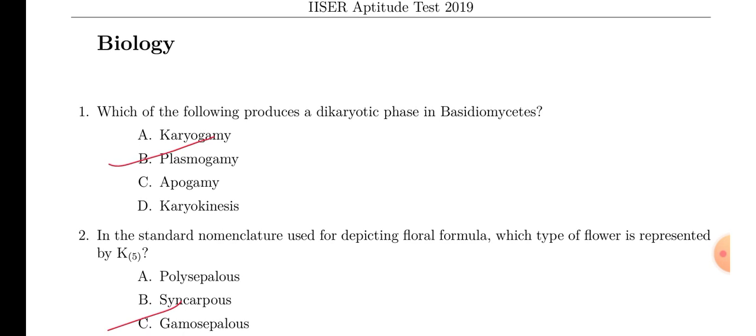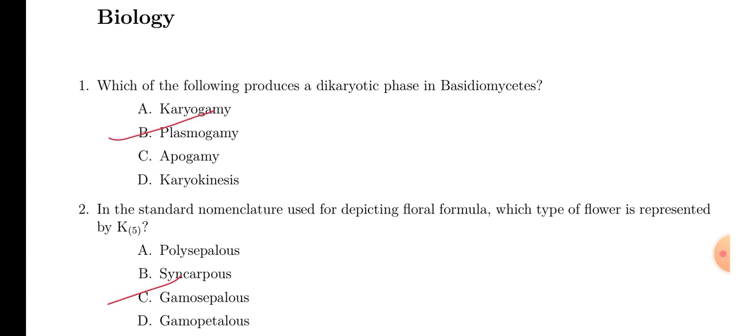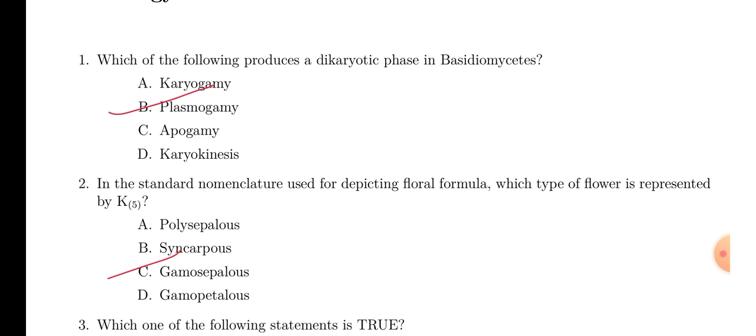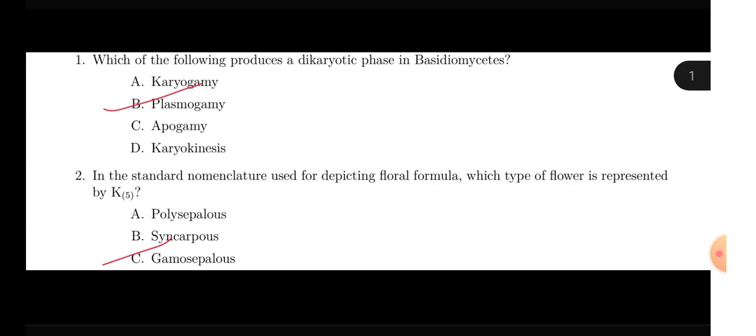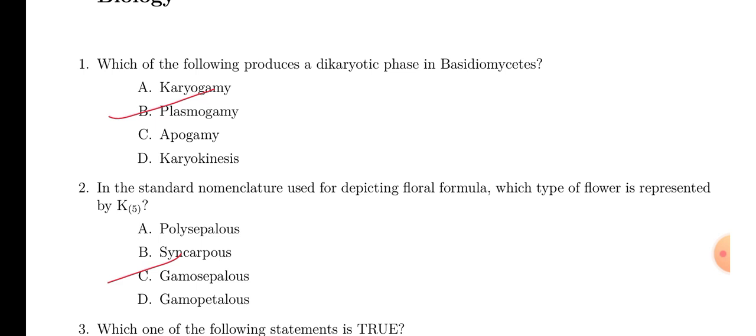First question is, which of the following produces a dicaryotic phase in Basidiomycetes? In fungi, we know the three steps of their sexual reproduction: plasmogamy, karyogamy, and then formation of zygote. But in some fungi like Ascomycetes and Basidiomycetes, nuclear fusion does not occur immediately after the fusion of plasma membrane. So, in between plasmogamy and karyogamy, there is a step known as dicaryotic phase denoted by N plus N. So, actually, plasmogamy produces that stage. So, here plasmogamy will be the answer.